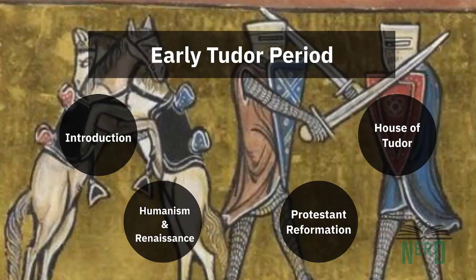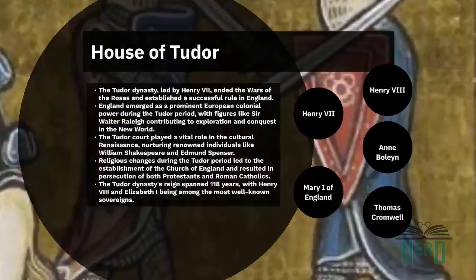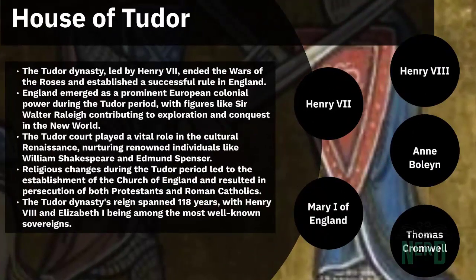The House of Tudor, with its five sovereigns — six if Lady Jane Grey is included — holds a significant place in royal history. Led by Henry VII of Welsh origin, the Tudors successfully ended the War of the Roses and established a prosperous rule.